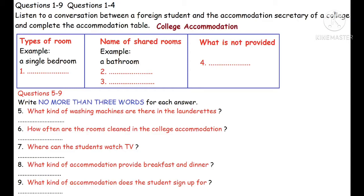And the towels? No, you have to bring your own towels with you. Is there a place where I can do my washing? Yes, there are two accommodation buildings in the college, and both of these have laundrettes — places where you can take your washing and there are washing machines. Is it free? No, there are coin-operated washing machines, so you use coins to make the machine work. The rooms are cleaned every week and the bed linen is changed at the same time.